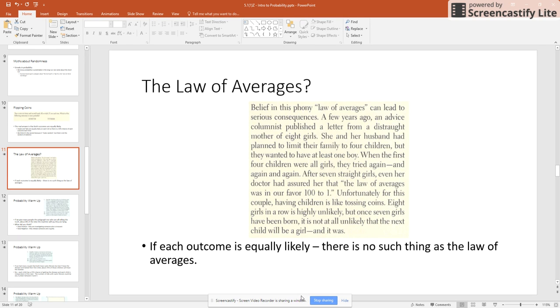After seven straight girls, even her doctor had assured her that the law of averages was in our favor, 100 to one. Unfortunately for this couple, having children is like tossing coins. Eight girls in a row is highly unlikely. But once seven girls have been born, it's not at all unlikely that the next child will be a girl. And it was.